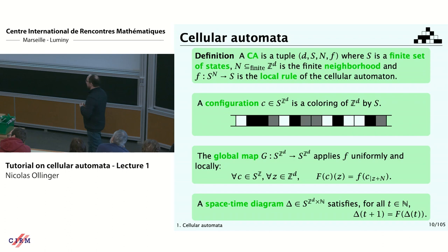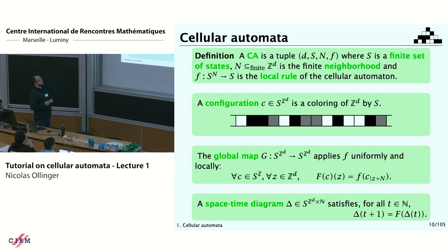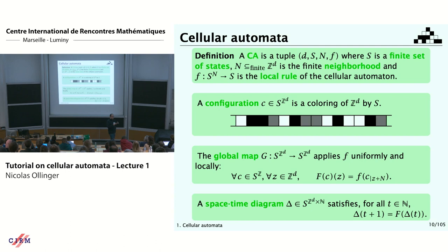What's a cellular automaton? To give a cellular automaton, you need to decide the space on which you work — I will give the dimension of my Z^d grid. You need a finite set of states, I will call it S. You need some way to describe the locality of the rule, which is the neighborhood N — a finite subset of the grid. And you have your local update rule that describes how your cell will change according to what it sees in its neighborhood.